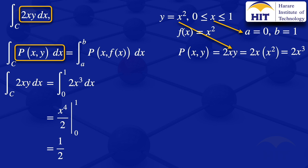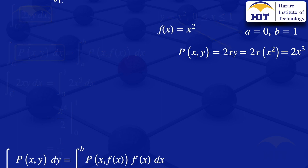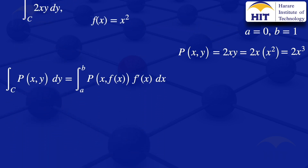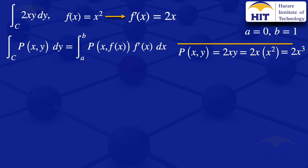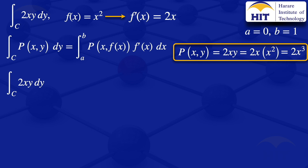Moving on to the second one: the integral along the curve C of 2xy with respect to y. The formula now requires f prime of x. Since f of x equals x squared, differentiating gives f prime of x equals 2x. Our p of x, f of x was already obtained as 2x cubed.